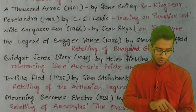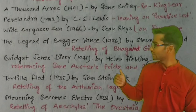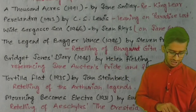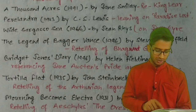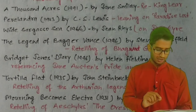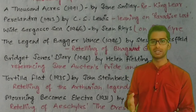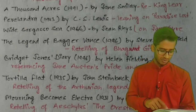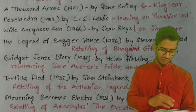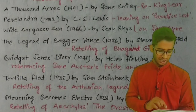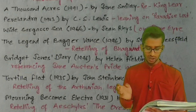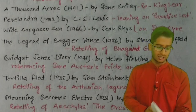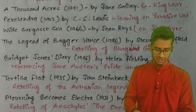'Tortilla Flat' (1935) by John Steinbeck was a retelling of the Arthurian legends. And 'Mourning Becomes Electra' (1931) by Eugene O'Neill was a retelling of the Oresteia. These are the examples of intertextuality.